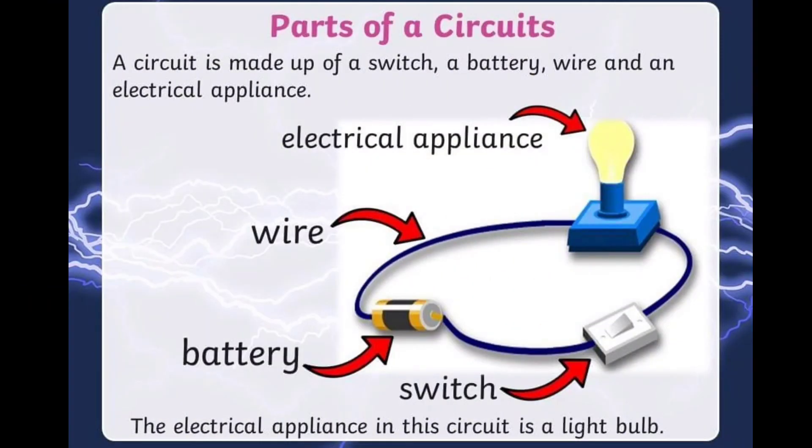A circuit is made up of a switch, a battery, wire, and an electrical appliance. The electrical appliance in this circuit is a light bulb.